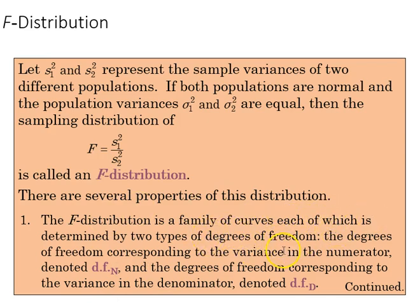Two types of degrees of freedom here: the degrees of freedom corresponding to the variance in the numerator, which is going to be df subscript N, and the degree of freedom corresponding to the variance in the denominator, df subscript D.